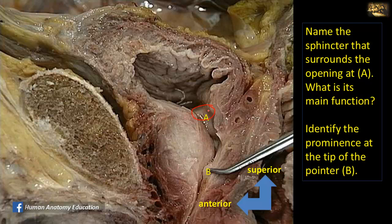During ejaculation it contracts, preventing retrograde ejaculation into the bladder, so that sperm and seminal fluid from the ejaculatory duct can only pass into the prostatic urethra to the external urethral meatus. This sphincter is made of smooth muscle fibers — the detrusor muscle fibers. It is a sphincter of the bladder rather than of the urethra. The sphincter of the urethra is located around the membranous part of the urethra and is called the sphincter urethrae or the external urethral sphincter.